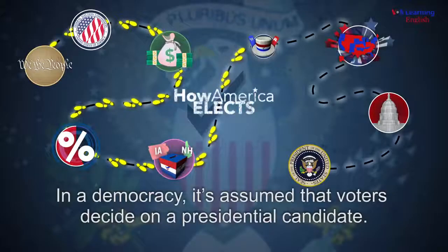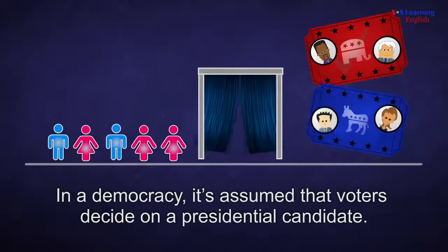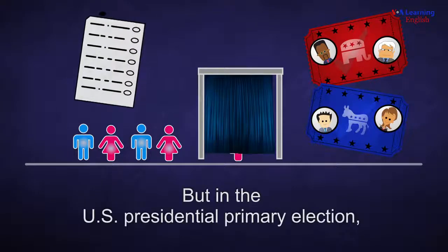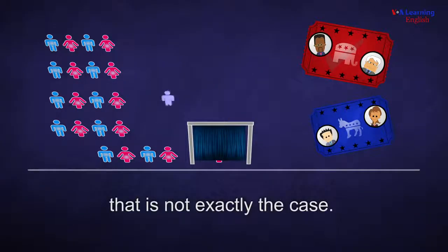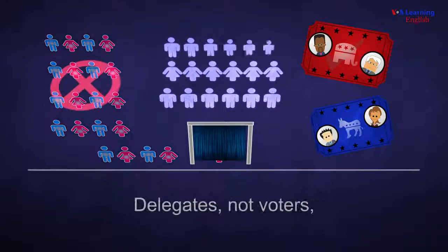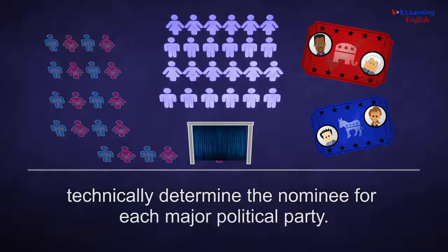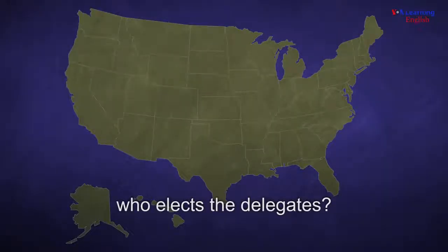In a democracy, it's assumed that voters decide on a presidential candidate, but in the U.S. presidential primary election, that is not exactly the case. Delegates, not voters, technically determine the nominee for each major political party. So, if the delegates elect the candidates, who elects the delegates?